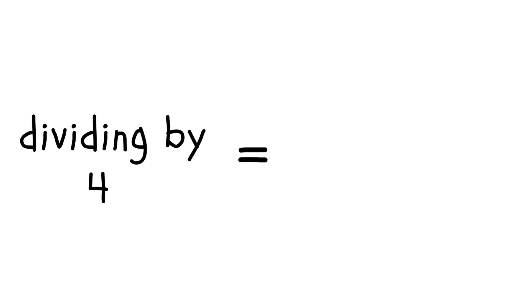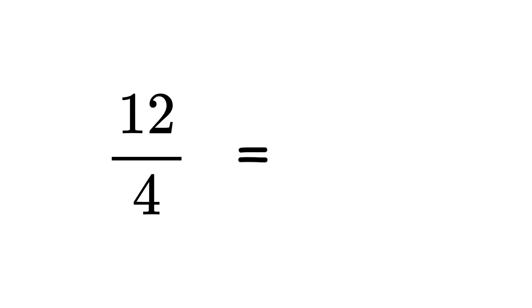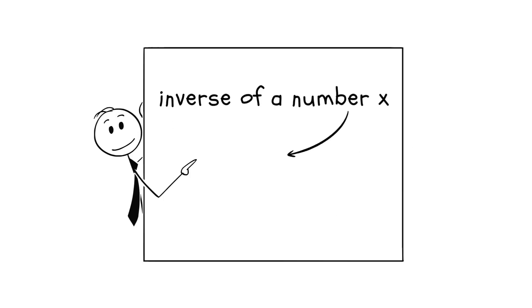Dividing by four is the same as multiplying by its inverse, which is one-fourth. 12 divided by four equals 12 times one-fourth. The inverse of a number x is the number that, when multiplied by x, gives you one.